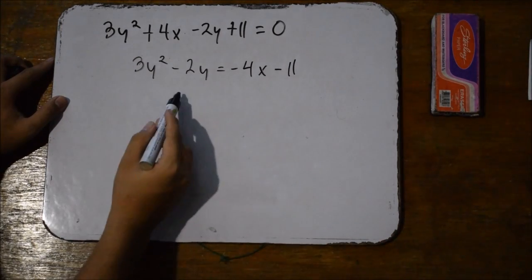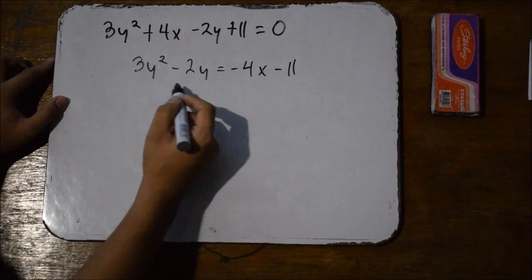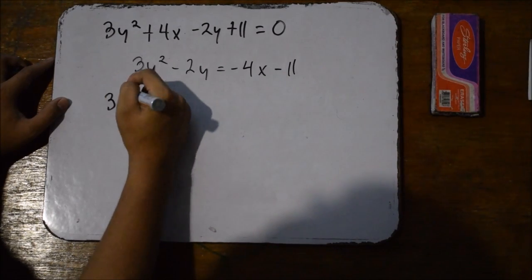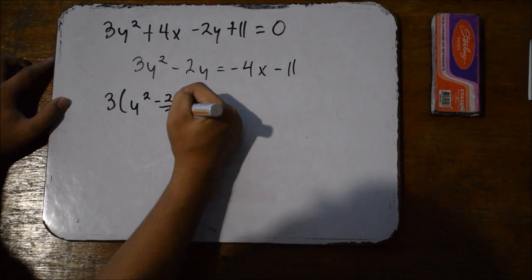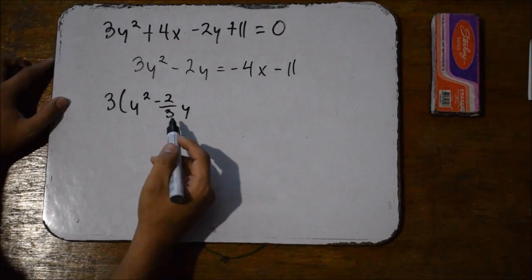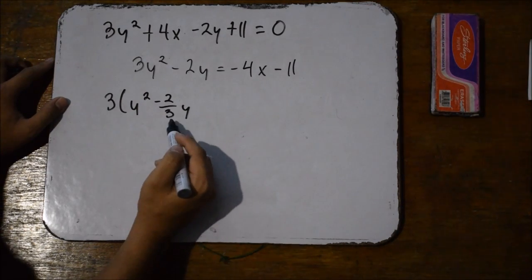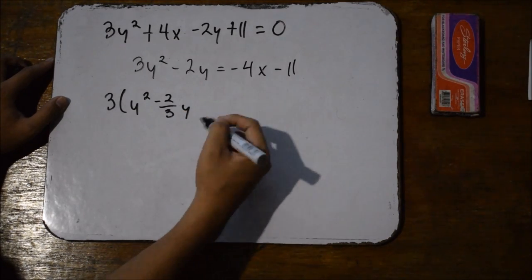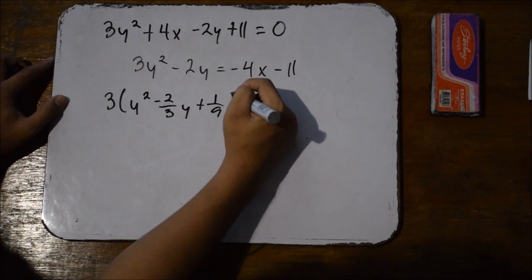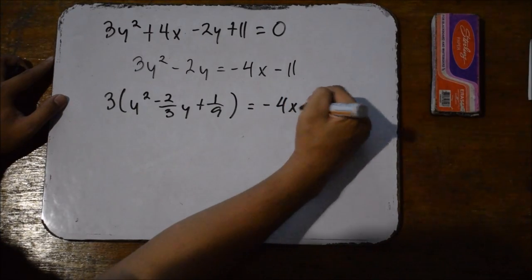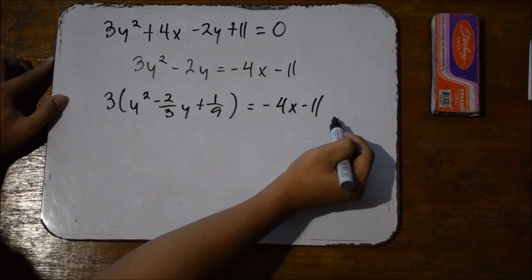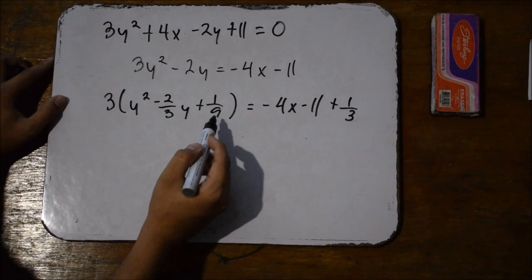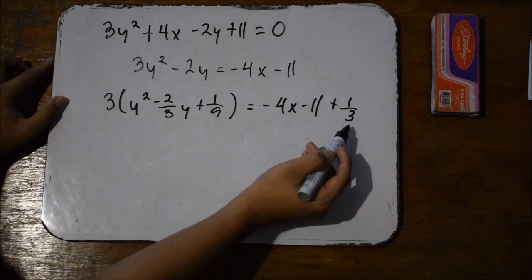Then we're going to factor this out. Even though 2 can't be divided completely by 3, we still need to factor it because we need to leave the equation with y squared. So 3 times the quantity of y squared minus 2 thirds y. Then we're going to complete the square: divide the second term by 2 — negative 2 thirds divided by 2 is negative 1 third — and square it: negative 1 third squared is 1 ninth. Whatever we added here should be added to the other side, but this time we add 1 third, because 1 ninth times 3 equals 1 third.